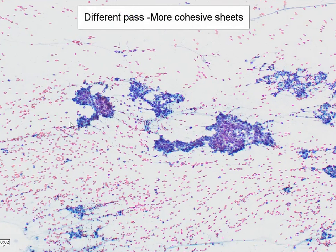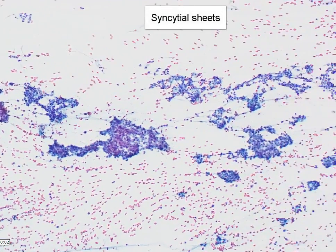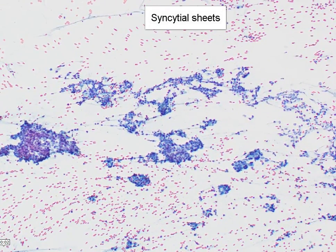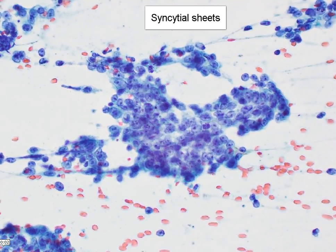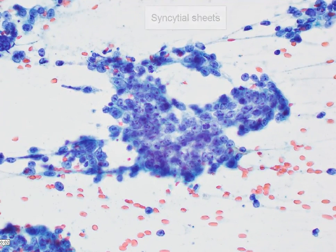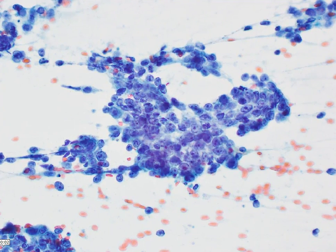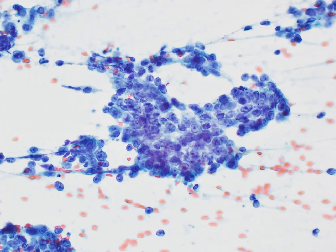This is taken from a different pass, and here we can appreciate that there is more cohesion, and what we are seeing are syncytial sheets of these malignant cells. As we move along, we can see that there are some very well-formed tissue fragments. When we focus up and down, we are actually able to see that there is quite a bit of crowding and overlapping of the nuclei. There are no really distinct cytoplasmic outlines where we can see where one cell stops and the other cell starts. This is what syncytial means — it is quite a disorganized group.